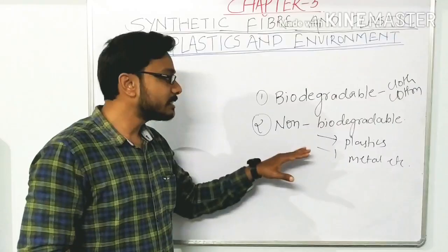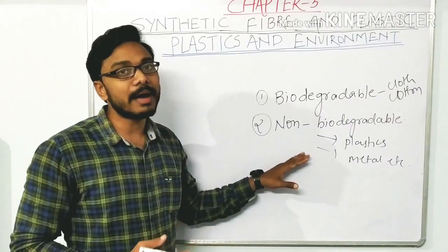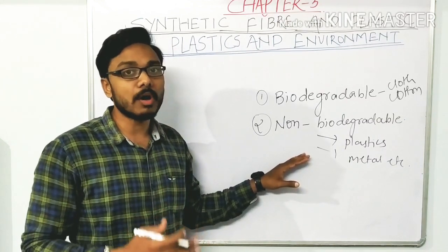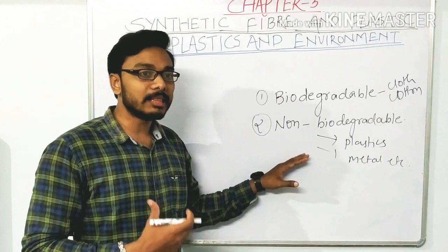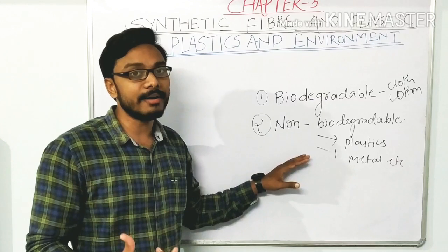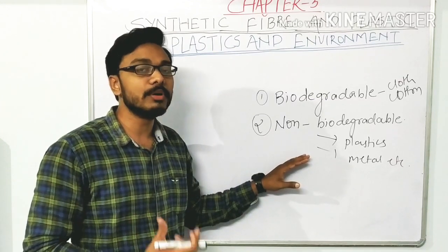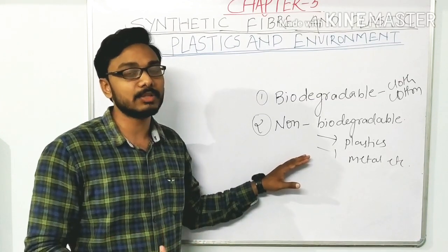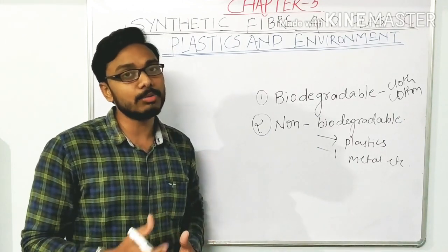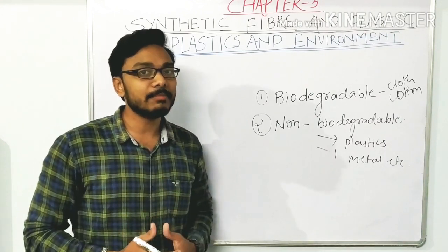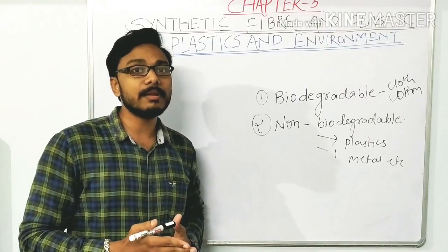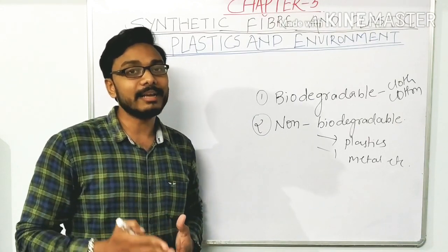Plastics are considered non-biodegradable material because they take a very long time to decompose in soil. If I throw a plastic pouch today, it will take at least 100 years or more than 500 years to decompose completely. But a piece of cotton will take hardly two to three months. Here I am showing you a list of materials according to their decomposition time in soil.